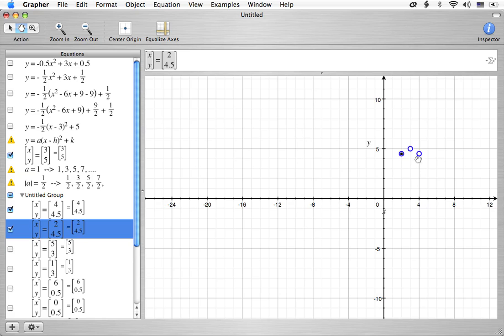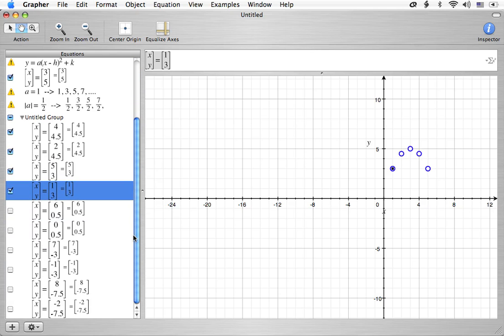Now we're going to be going down 3 halves. So over 1 to 5 and down 3 halves will put us at 3. So that point will be 5, 3. And then over 1 this way and down 3 halves will put us at 1, 3 right there. The next point we get by going over 1 from 5, 3. And this time we're going down 5 halves, which will put us at 1 half. So 6 and 0.5, which is right there. And then from 1 we'll go over to 0 and down to the same y value of 0.5.